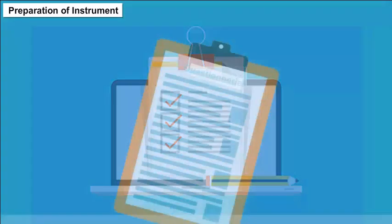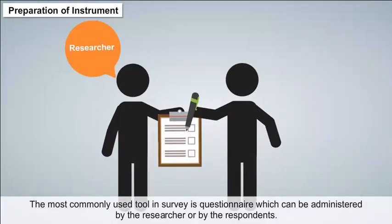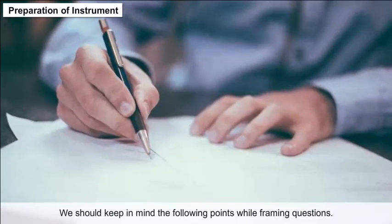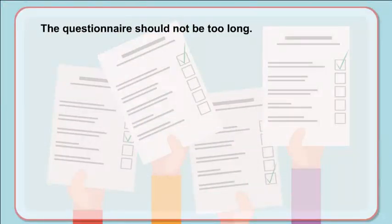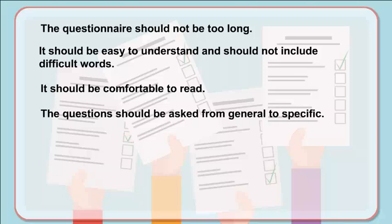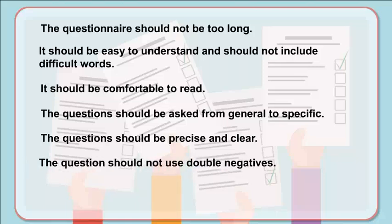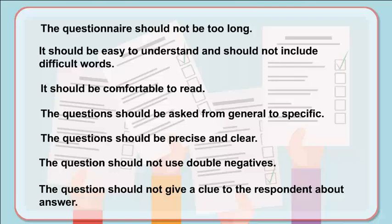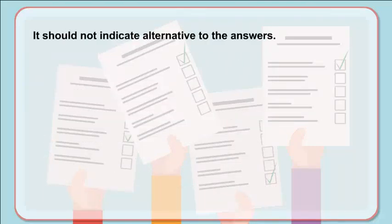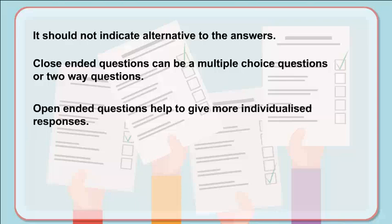Preparation of instrument: The most commonly used tool in a survey is a questionnaire, which can be administered by the researcher or by the respondents. Key points while framing questions: the questionnaire should not be too long; it should be easy to understand and not include difficult words; questions should go from general to specific; questions should be precise and clear; they should not use double negatives or give clues to the respondent. Close-ended questions can be multiple choice or two-way; open-ended questions help give more individualized responses.